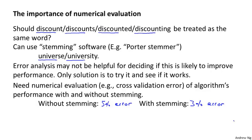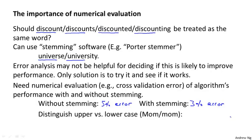For this particular problem, there's a very natural single-number evaluation metric, namely the cross-validation error, and this lets you make these decisions much more quickly. As another quick example, let's say you're also trying to decide whether or not to distinguish between upper and lowercase — whether the word 'Mom' with an uppercase M versus lowercase m should be treated as the same word or different words. If you try this out and stop distinguishing upper and lowercase, maybe you end up with 3.2% error, which is worse than using only stemming. This lets you very quickly decide whether or not to distinguish between upper and lowercase.